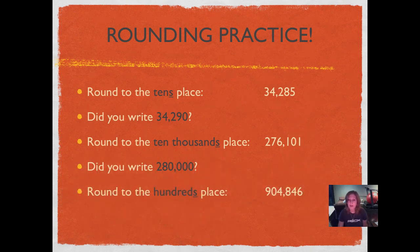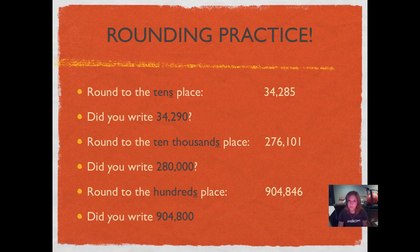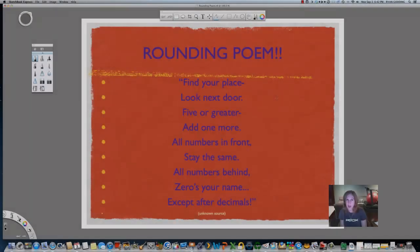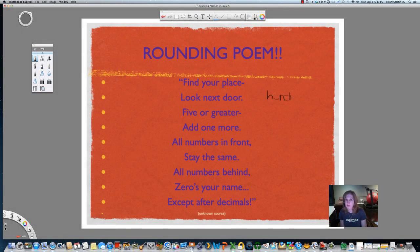Round to the hundreds place: nine hundred four thousand, eight hundred forty-six. Pause and start again when you're ready. Did you write nine hundred four thousand, eight hundred? We're rounding nine hundred four thousand, eight hundred forty-six. Ones, tens, hundreds — we found our place. Look next door. Five or greater? Four is not five or greater, so this number is going to stay the same. All numbers in front stay the same. All numbers behind, zeros your name.